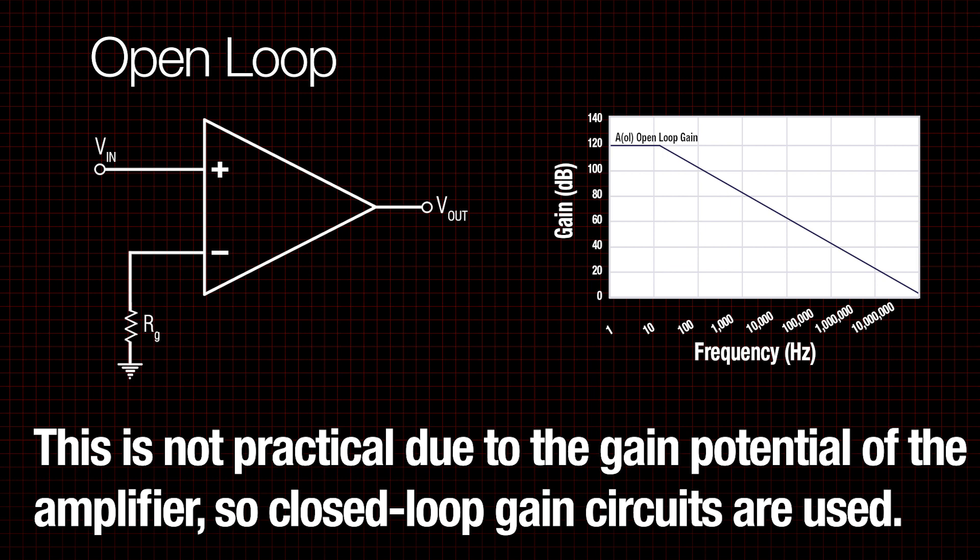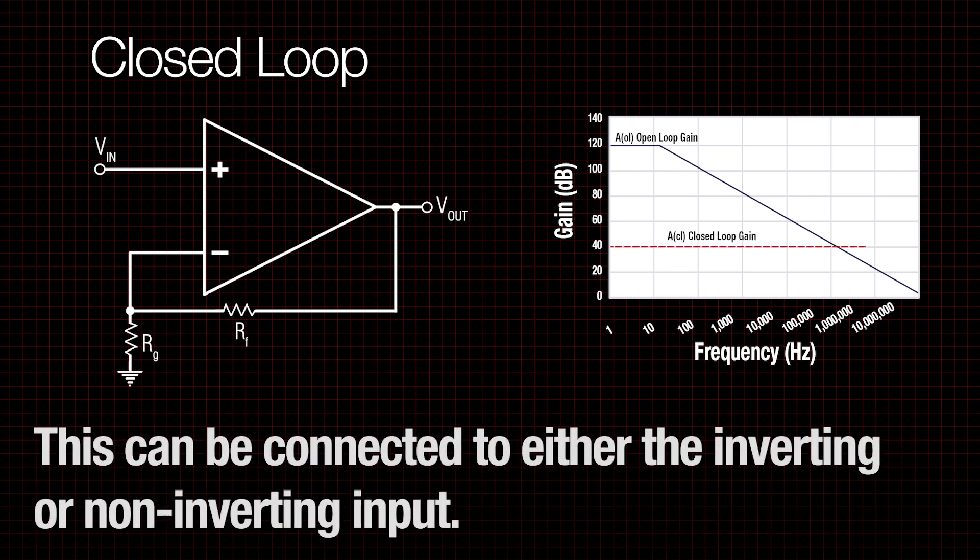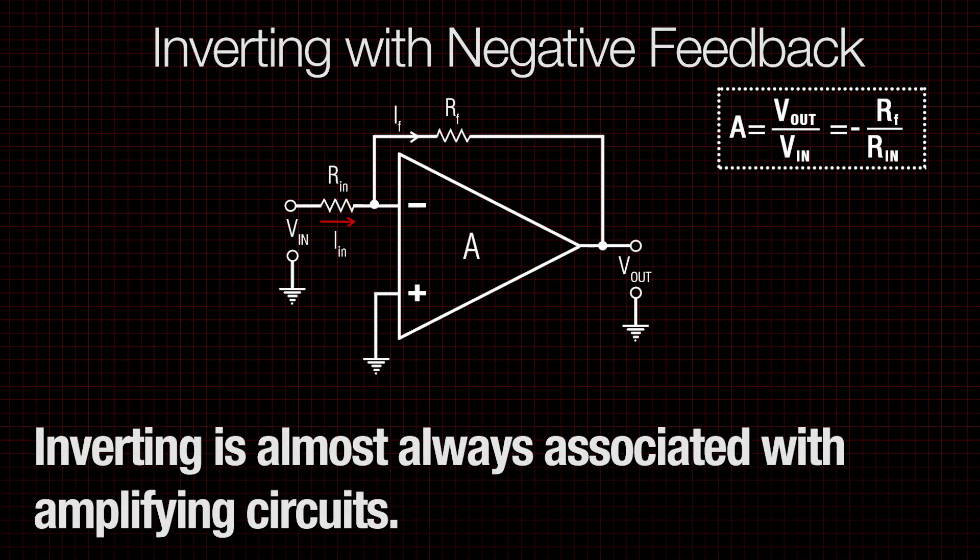This is not practical due to the gain potential of the amplifier, so closed loop gain circuits are used. Closed loop gain occurs when the feedback loop is set up from the output to the input. This can be connected to either an inverting or non-inverting input. Inverting is almost always associated with amplifying circuits.